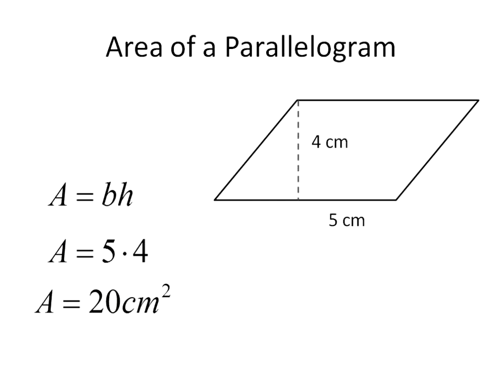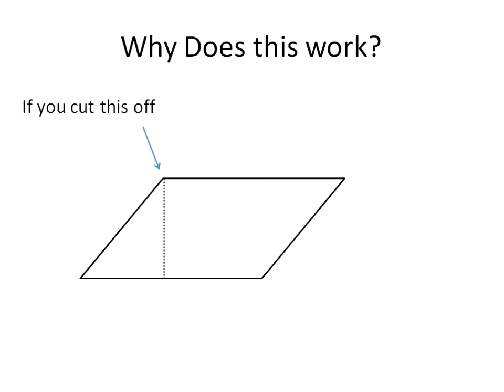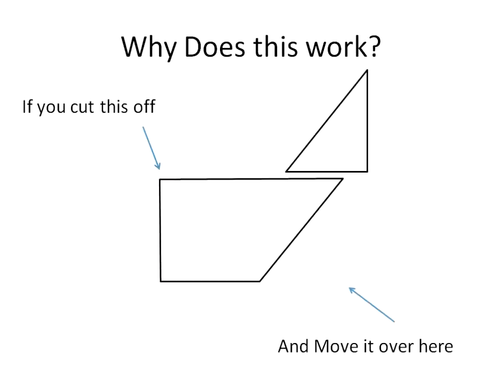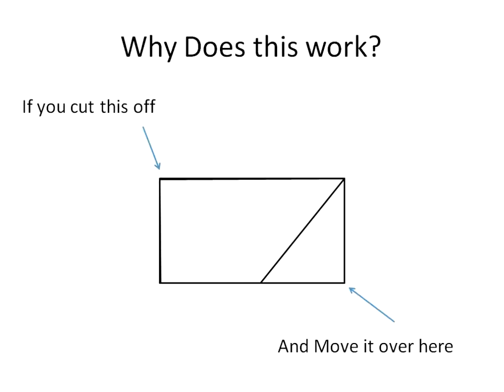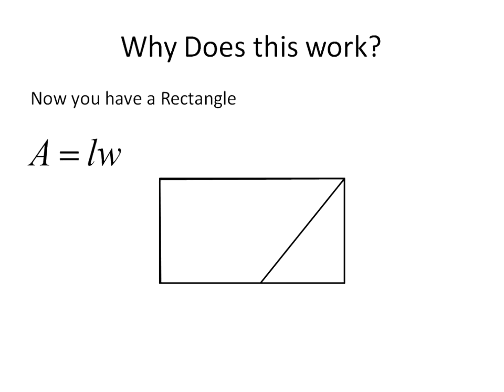Now you might wonder why this works — multiplying 5 times 4. I'm going to show you using a little bit of animation why this would work. If you took this edge of the parallelogram and cut it off and moved it over, you will see that it is a rectangle. A parallelogram essentially is a rectangle where you take that corner triangle and move it around. So we can say length times width, which is another way of saying the base times the height. Basically it's the same equation — the area of a rectangle and the area of a parallelogram are largely the same.